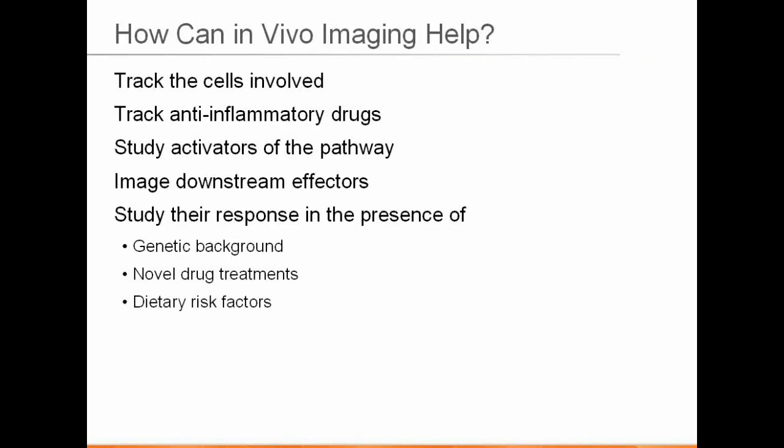Now let's get to the crux of what we want to talk about: how can in vivo imaging, in particular in vivo molecular imaging, help with studying the disease processes involved in inflammation, as well as the development of anti-inflammatory or perhaps subtly pro-inflammatory drugs, especially at the site of tumorigenesis. It can help in a wide variety of ways. One of the most basic is to help track the myriad of cells involved in the inflammatory process. You can label T-cells, and we'll give an example of labeling macrophages with near-IR dyes to track where they go around the body during an immune response.